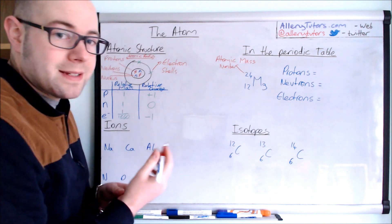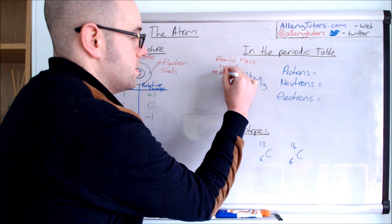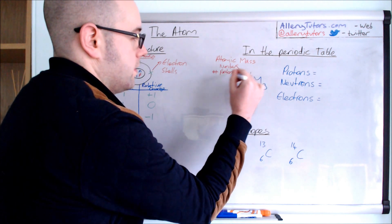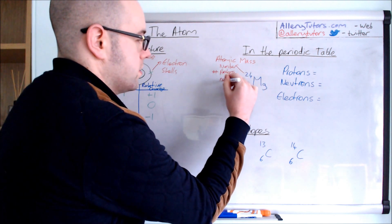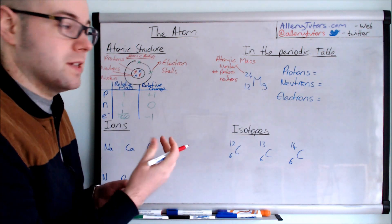And the atomic mass number tells us the number of protons and neutrons. So basically this is just the mass of the nucleus in the middle.